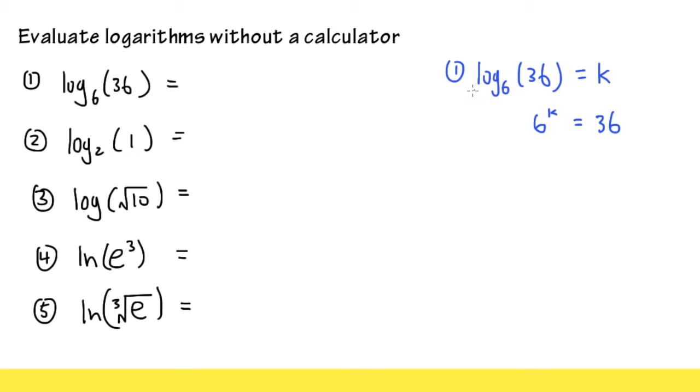This is how we change from a log equation into an exponential equation. And then you ask yourself, 6 to what power will give us 36? Well, we know 6 squared gives us 36, right? So we know k, this number here, has to be 2. And then we are done.